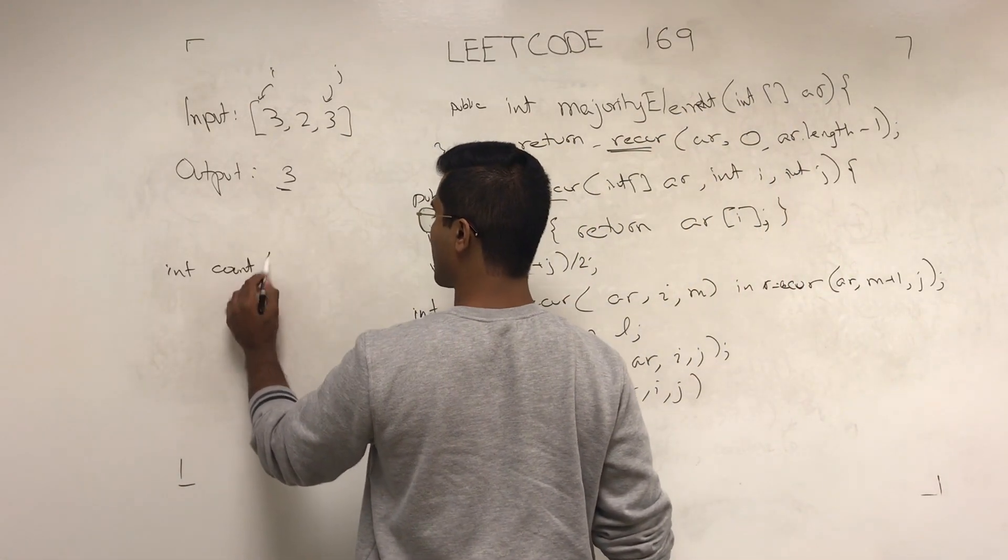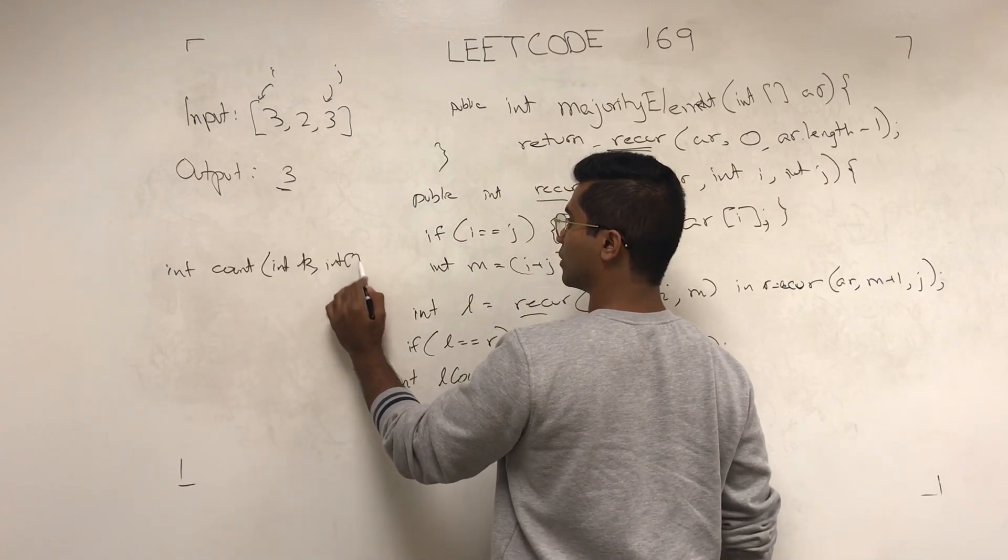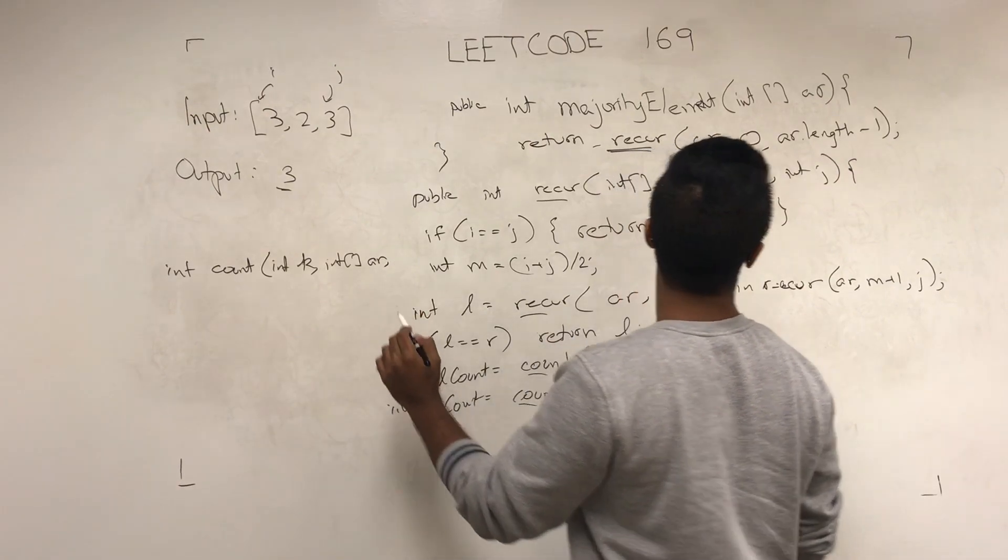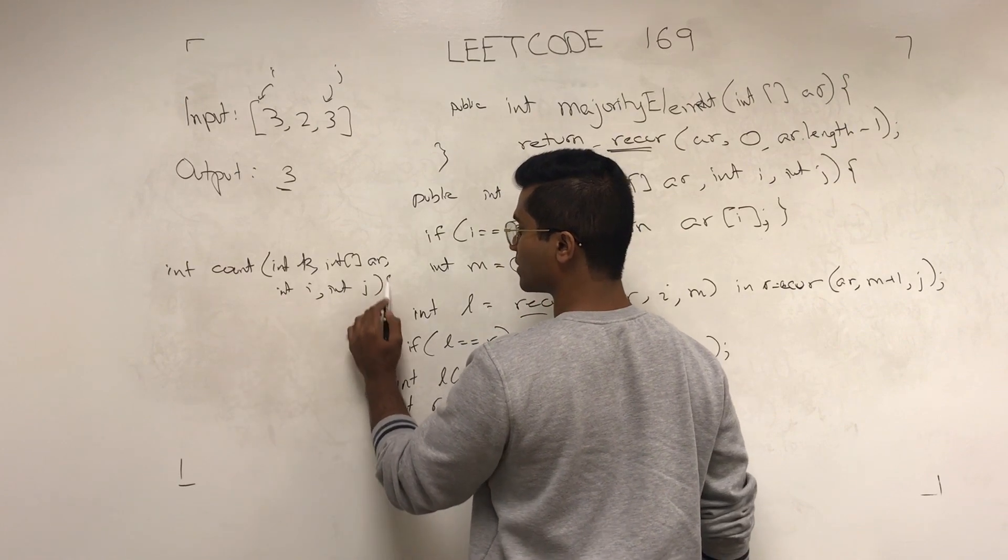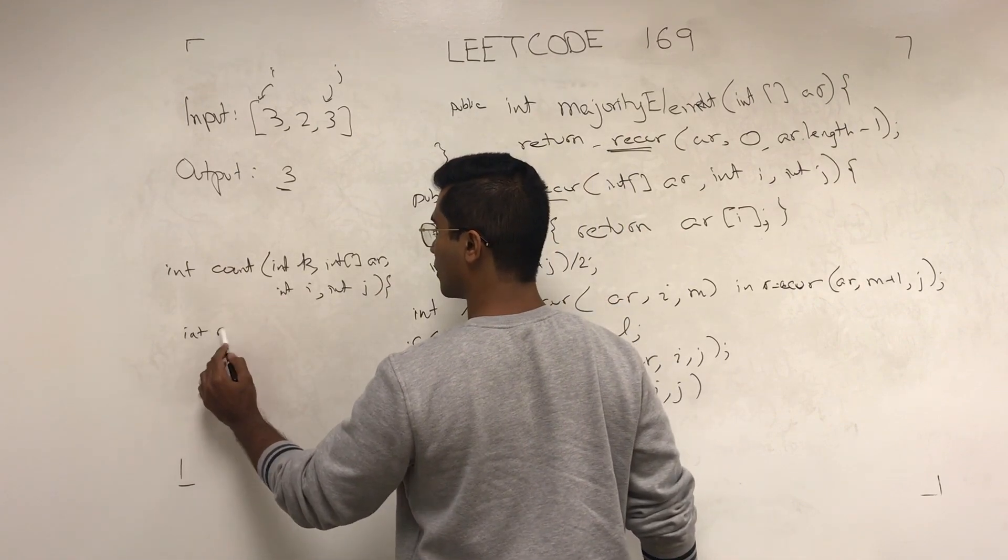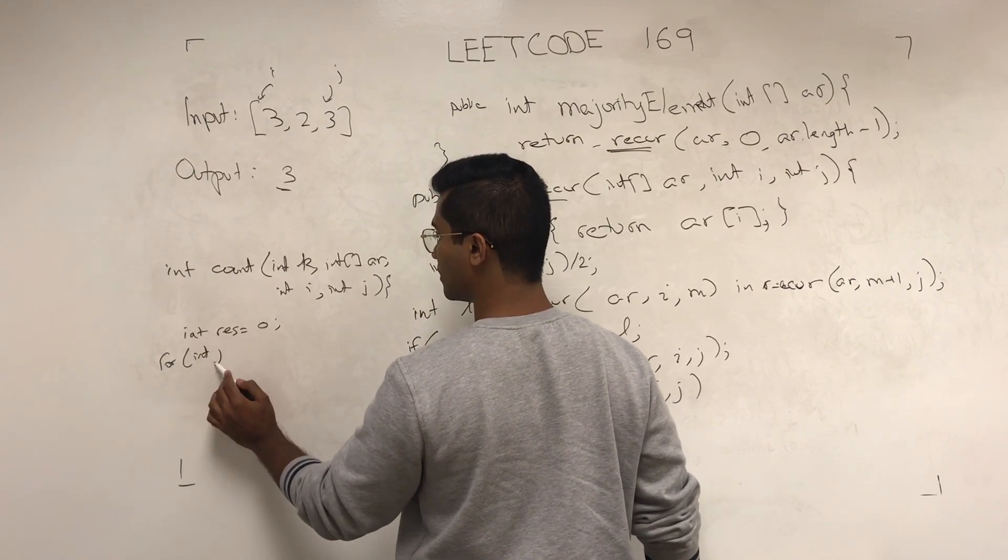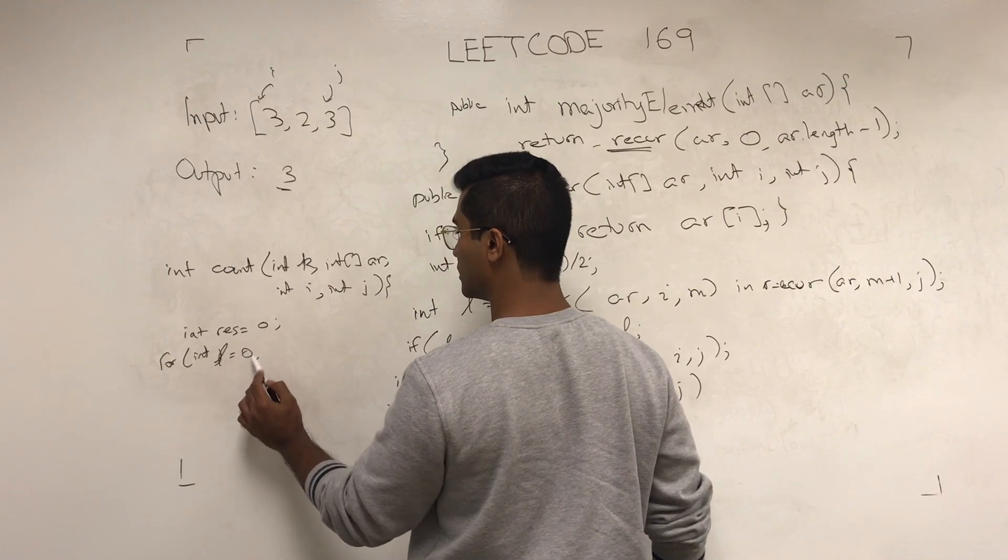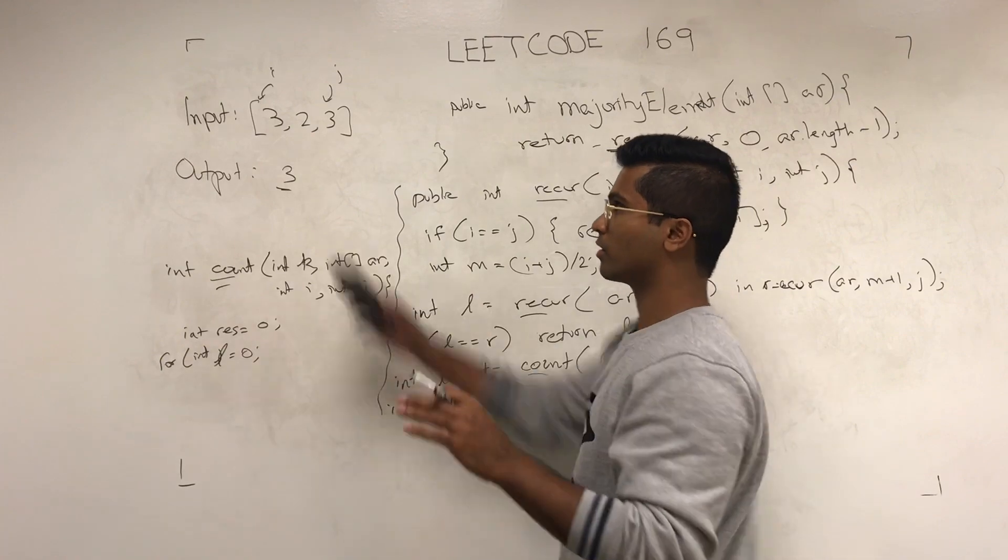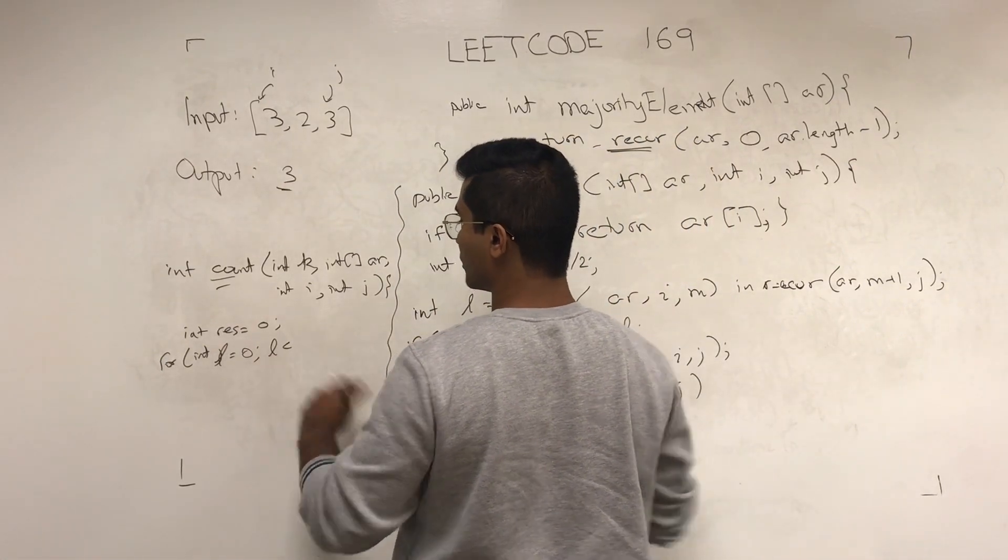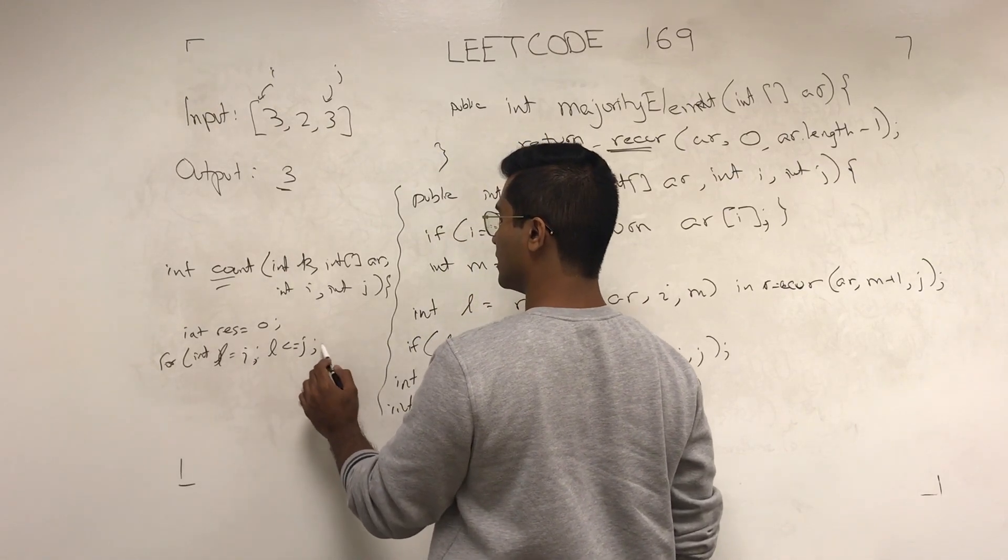Int count, k is what we're looking for, int array, let's call it AR, and int i, int j, these are the two boundaries. So, int res is going to be result. For int l is equal to i, this is a separate function that we're using just to count how many times a number occurs in this input. l is less than or equal to j, l plus plus.